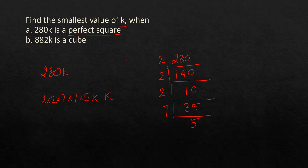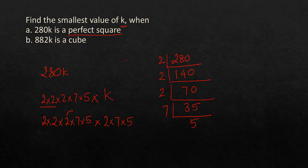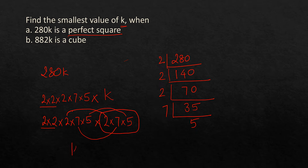For 280k to be a perfect square, every prime factor needs a pair. We have a pair of 2s already, but there's one extra 2 without a pair, a lone 7, and a lone 5. So k must supply one more 2, one 7, and one 5: k = 2 × 7 × 5 = 70.